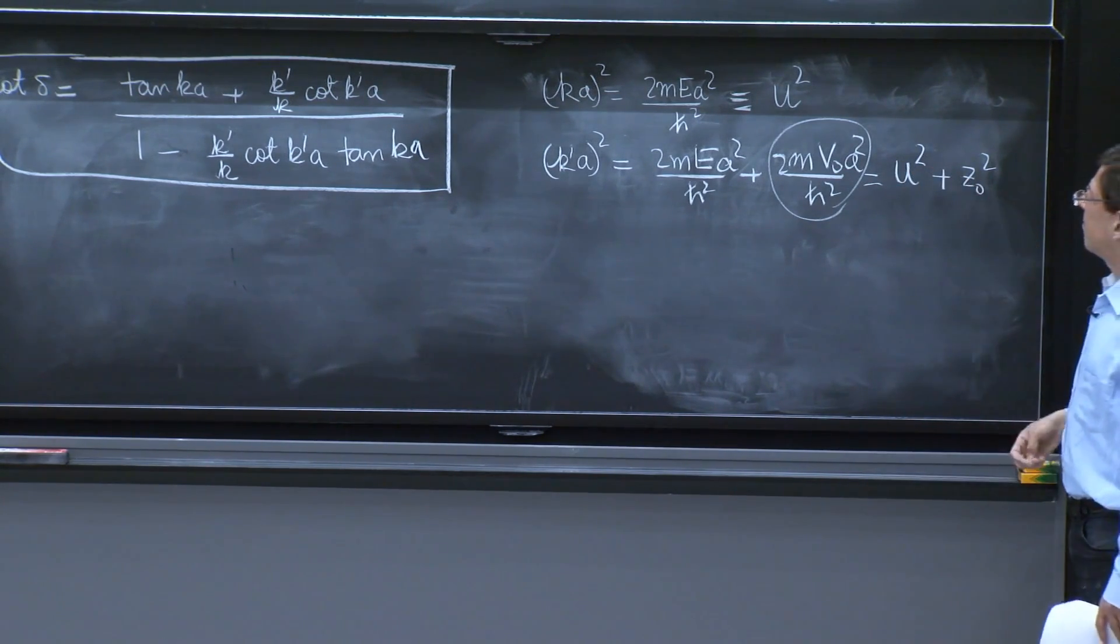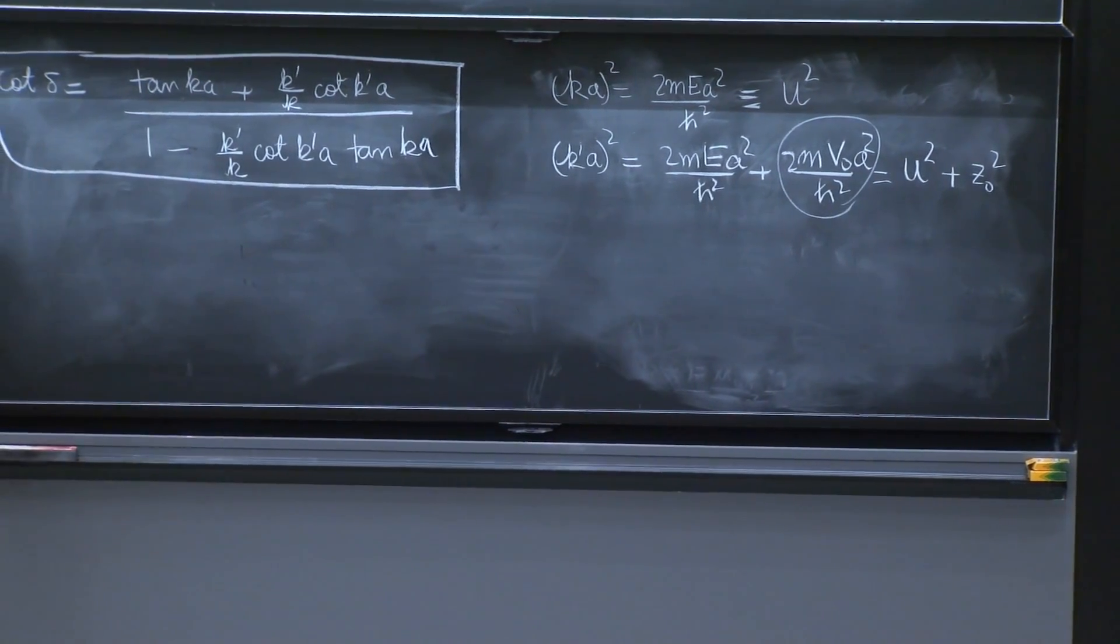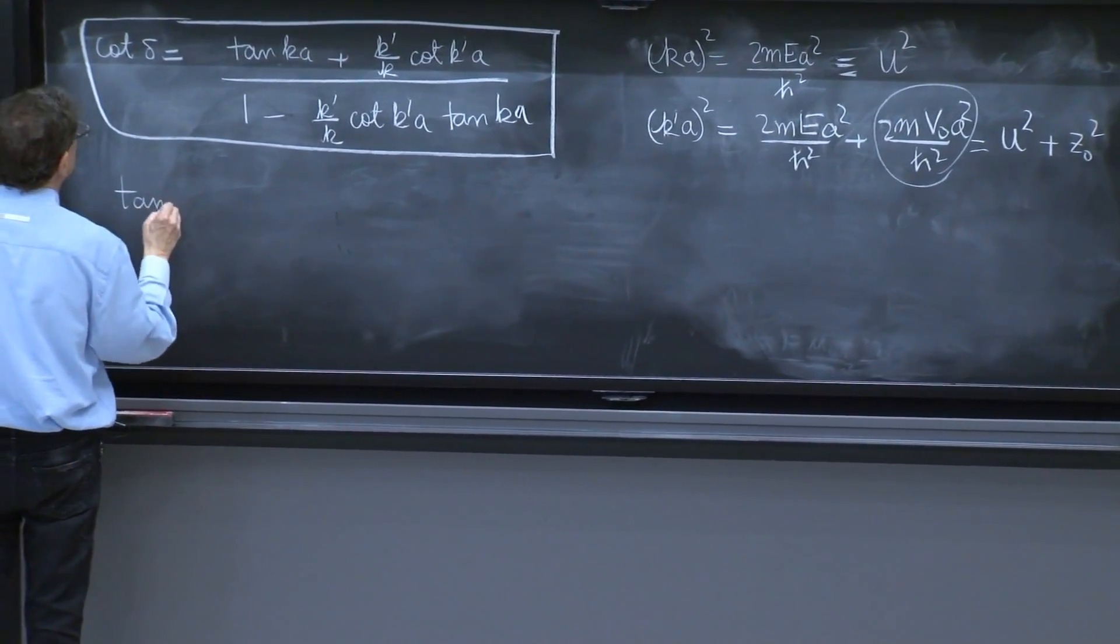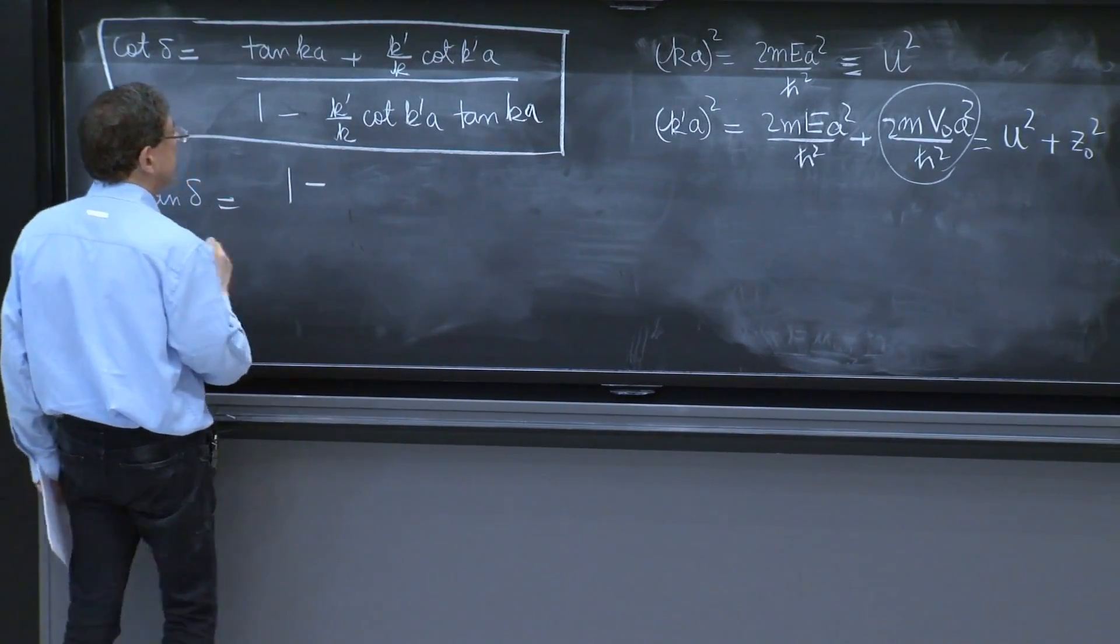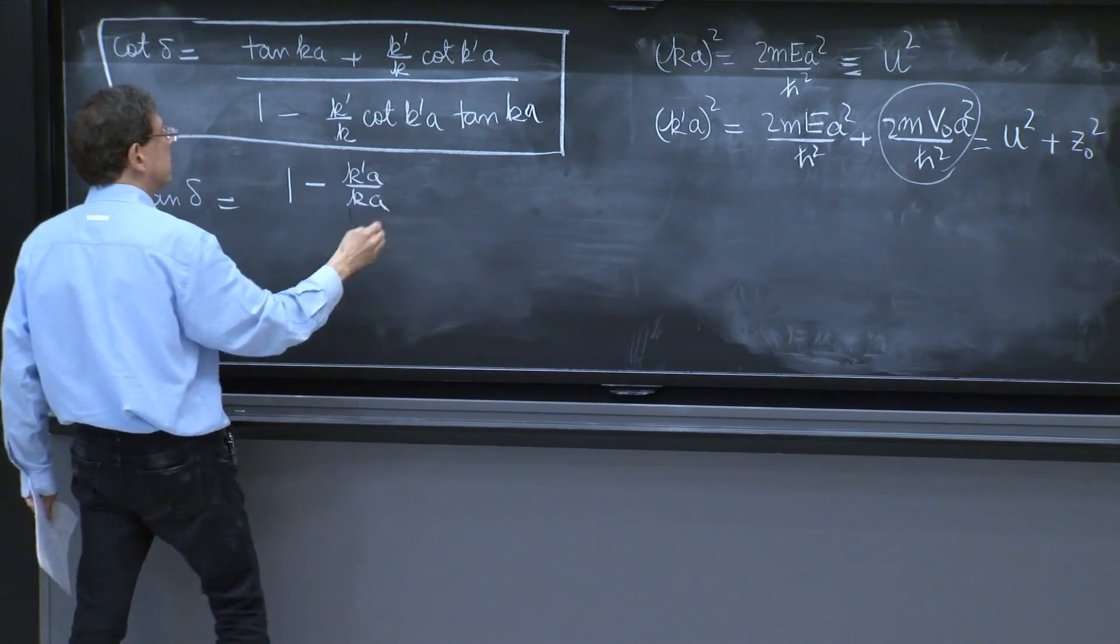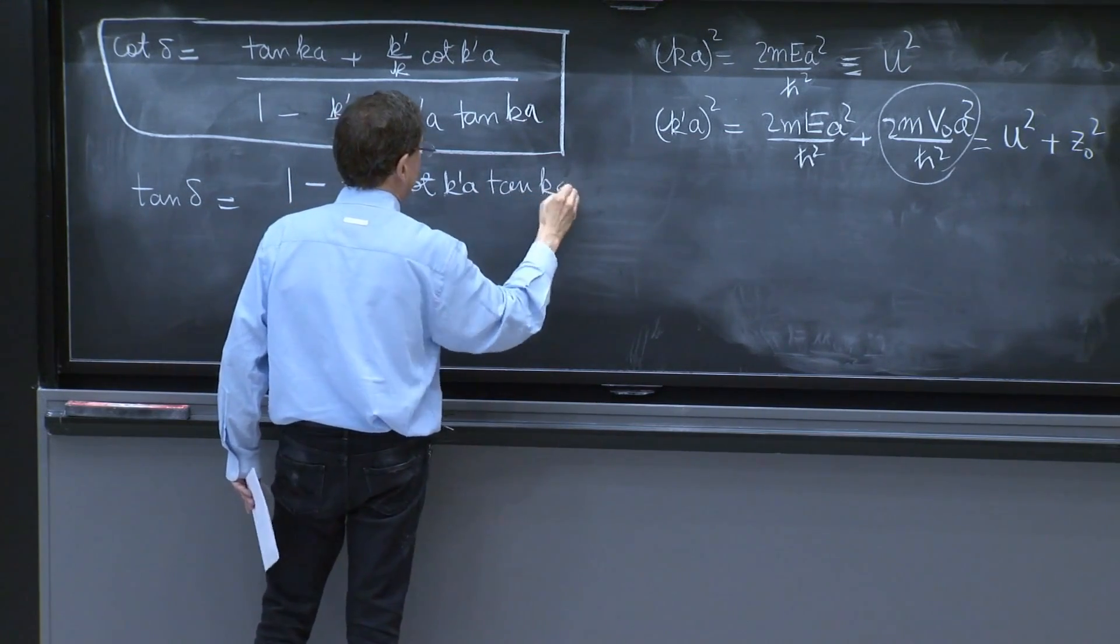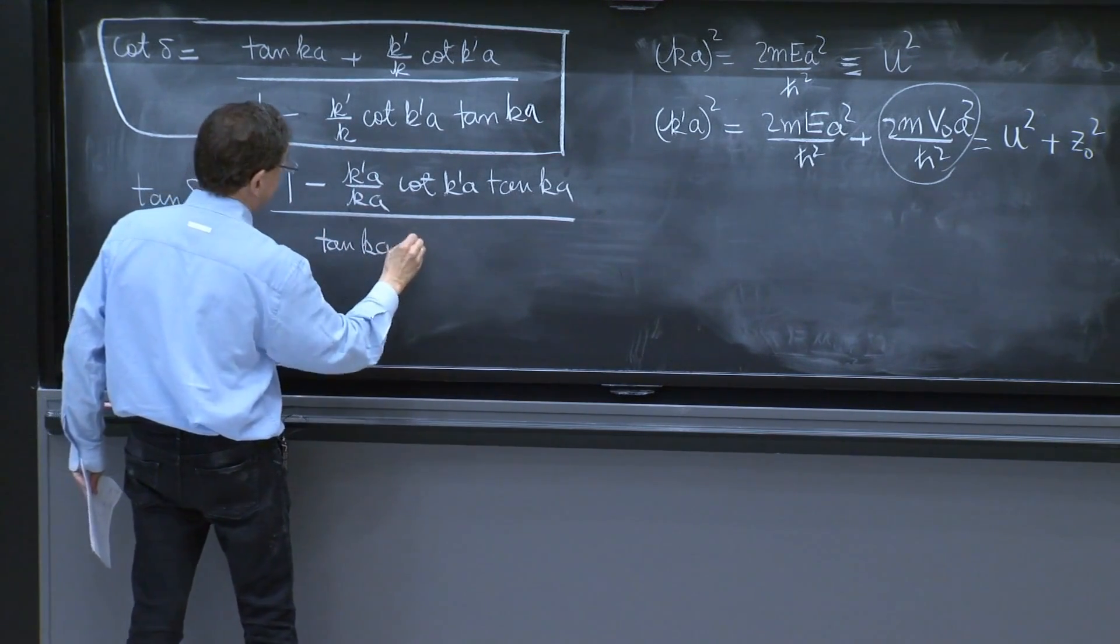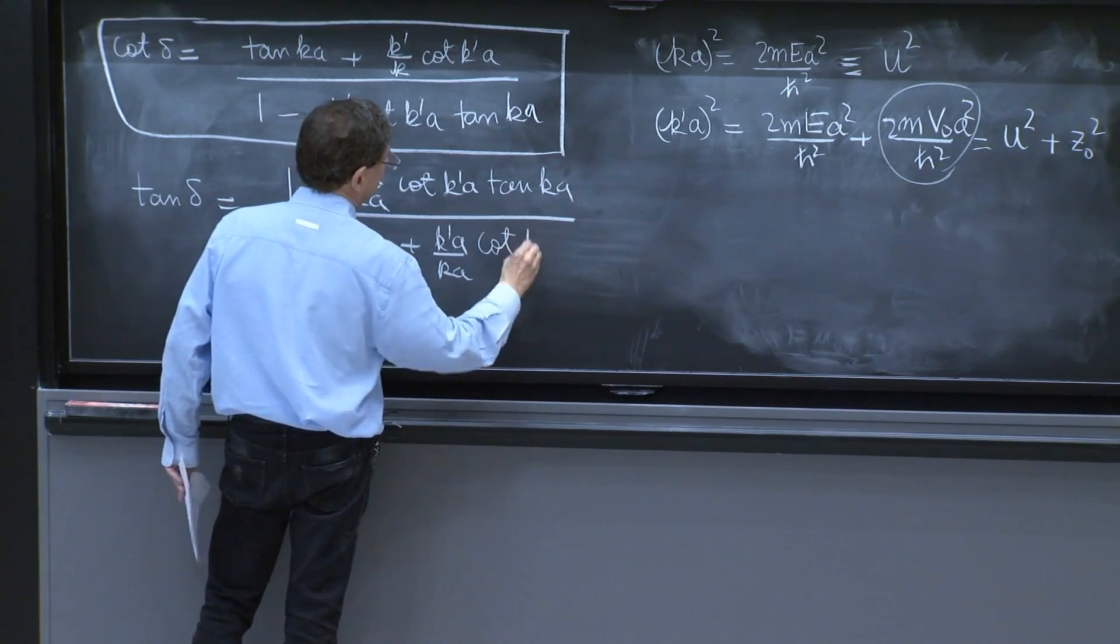So here we go. We have k prime a given by this quantity. And therefore, let me manipulate this equation. It's probably easier to consider just tan delta, which is the inverse of this. You would have 1 minus k prime a over ka cot k prime a tan ka over tan ka plus k prime a over ka cot k prime a.